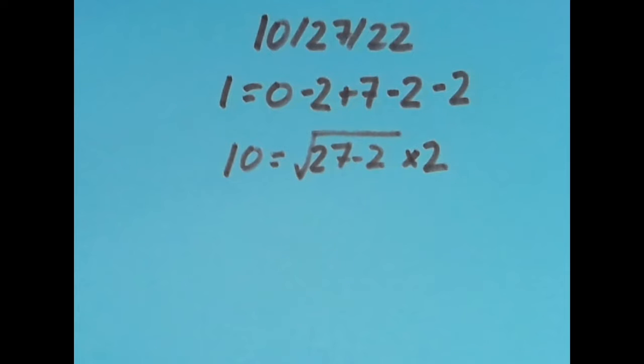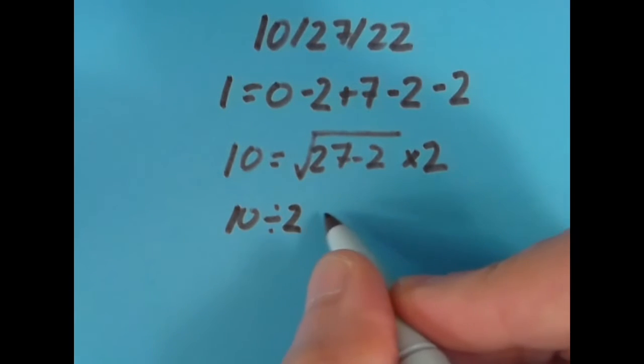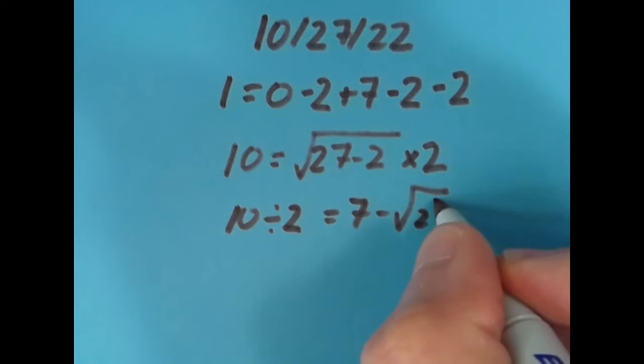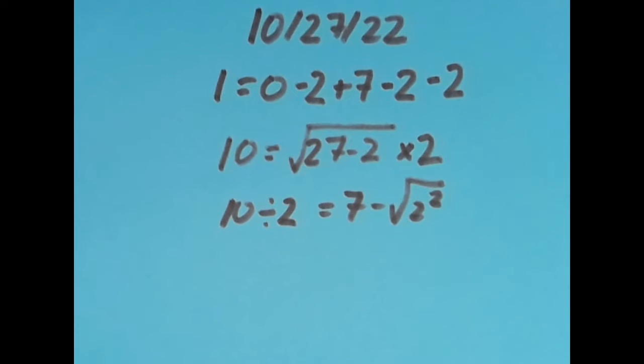If I move the equal sign over one more spot to the right, I get that 10 ÷ 2, which is 5, equals 7 minus the square root of 2 squared. So 2 squared is 4, the square root of 4 is 2, 7 - 2 is 5, just like 10 ÷ 2.